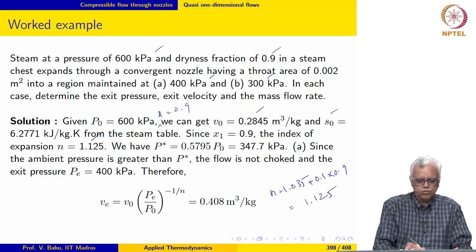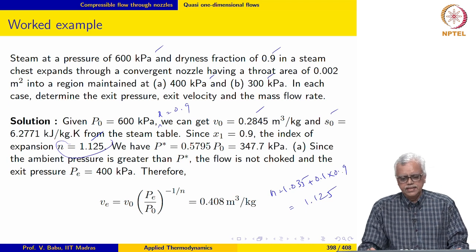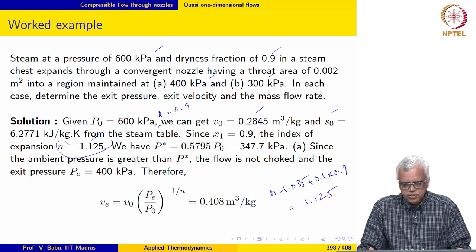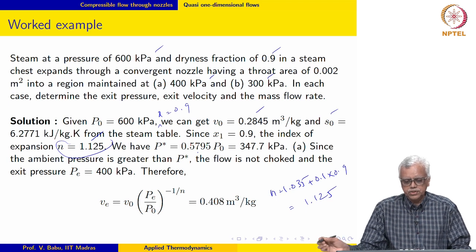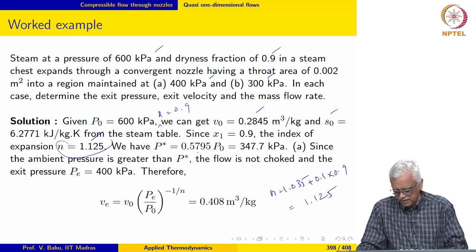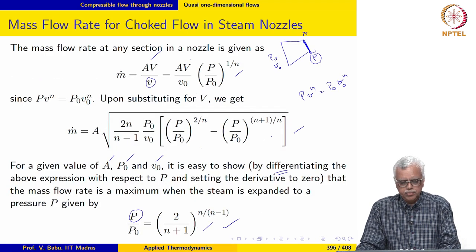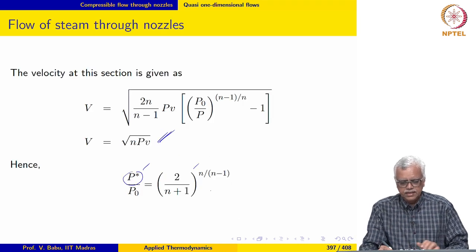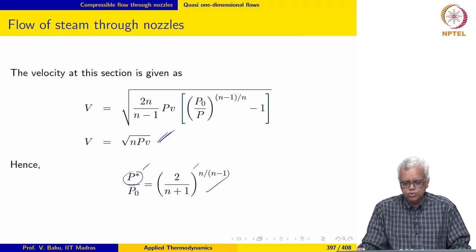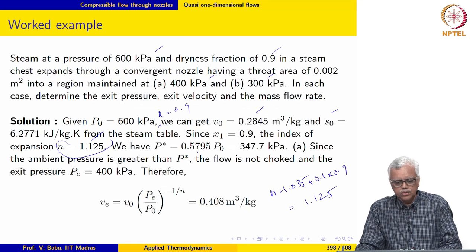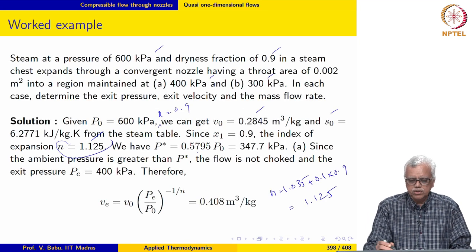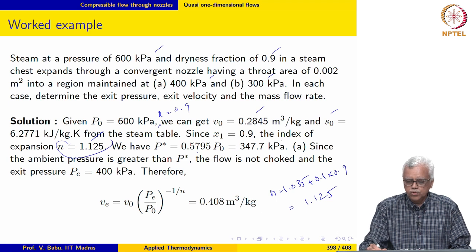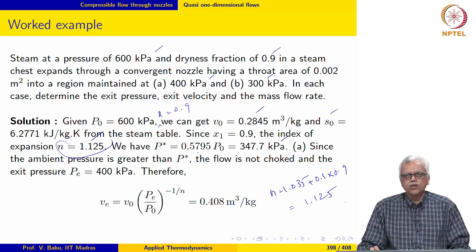So the index of expansion is 1.125, and p* may be evaluated using the expression: p* = (2 / (n+1))^(n/(n-1)). For this value of n, p* comes out to be 347.7 kPa.